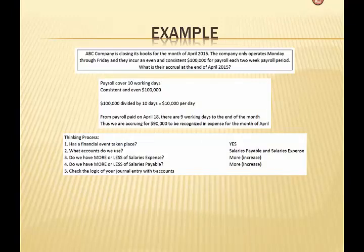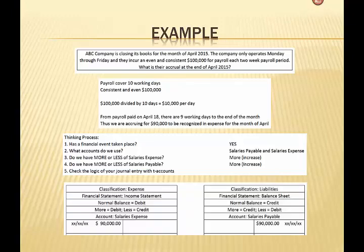Has a financial event taken place? Yes it has. What accounts do we use? We're going to use salaries payable and salaries expense. Do we have more or less of salaries expense? We have more. Do we have more or less of salaries payable? We have more. Salaries expense is classified as an expense — its normal balance is a debit, so to have more we debit that account. Salaries payable is a liability — its normal balance is a credit, so to have more liability we credit it. Our journal entry balances: $90,000 debit and $90,000 credit.